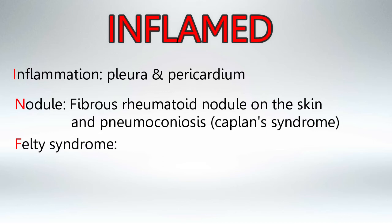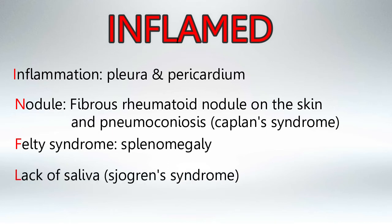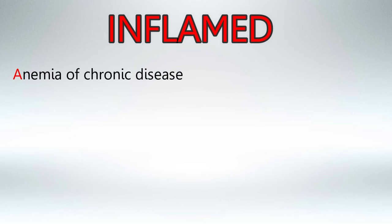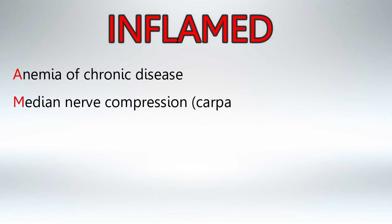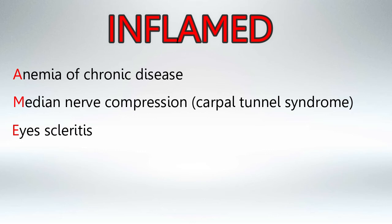F is for Felty's syndrome, which is basically splenomegaly induced by rheumatoid arthritis. L is for lack of saliva, caused by Sjögren's syndrome, which is associated with rheumatoid arthritis. A is for anemia of chronic disease. M is for median nerve compression, which is caused by carpal tunnel syndrome.